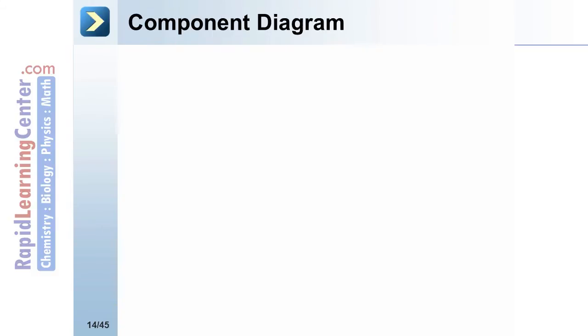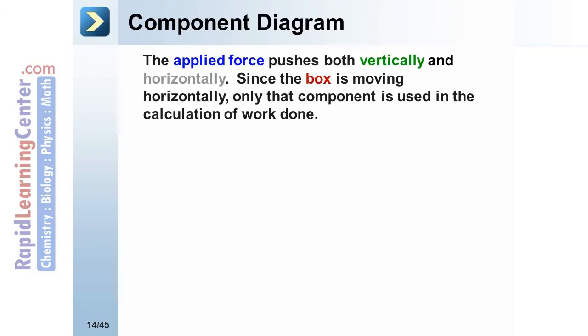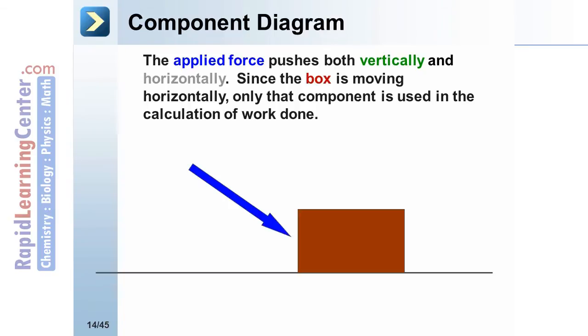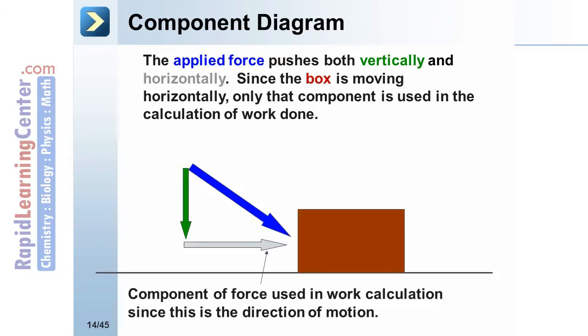Component Diagram. The applied force, the diagonal force, pushes both vertically and horizontally. Since the box is moving horizontally, only that component is used in the calculation of the work done. The other component, the vertical one, is not used at all.